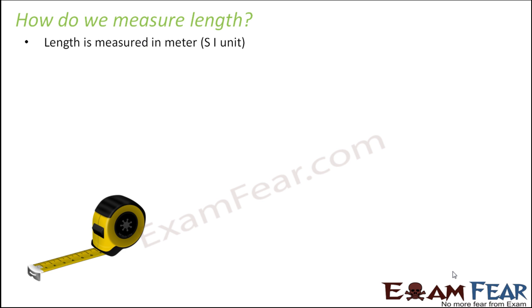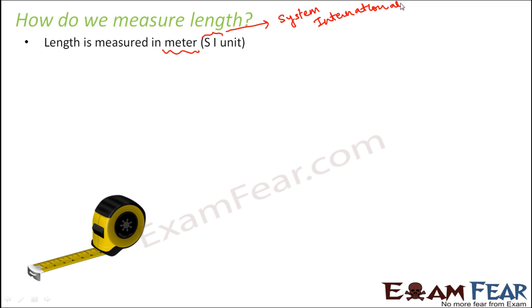The SI unit for length is meter. SI stands for System International. There are several units which exist for each physical quantity, and many traditional units differ in different parts of the world. For every physical quantity, a specific unit has been declared as the SI unit — the internationally accepted unit understood everywhere. For example, in small towns and villages in India, many people measure length using the width of their fingers or the length of their forearm — different references used by different people.